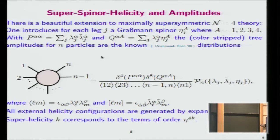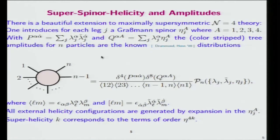That's well-known stuff. Then you can rewrite arbitrary tree-level scattering amplitudes in a very nice way. The total momentum becomes now a two-by-two matrix, given by the sum over the spinor helicity variables on the n legs. In fact, all external helicity configurations are generated by expansion in these Grassmann variables.